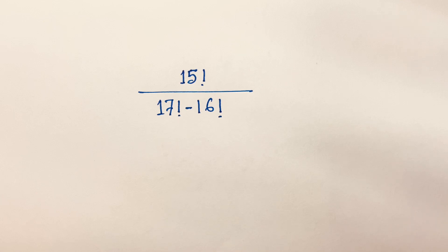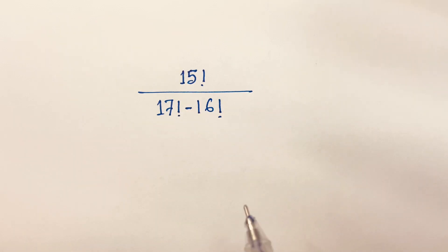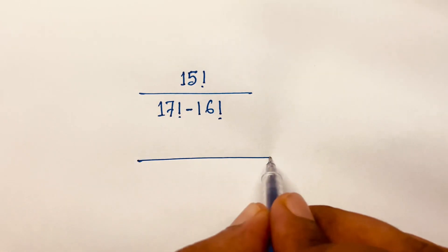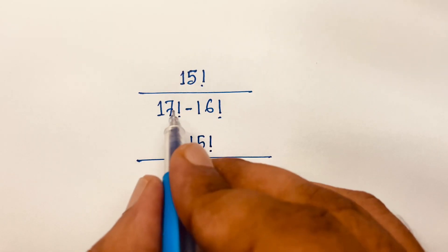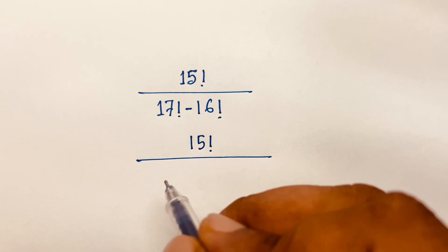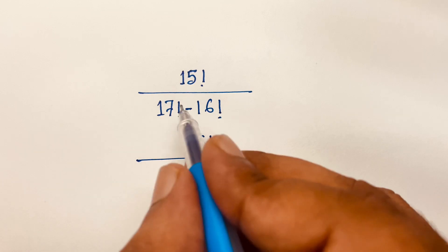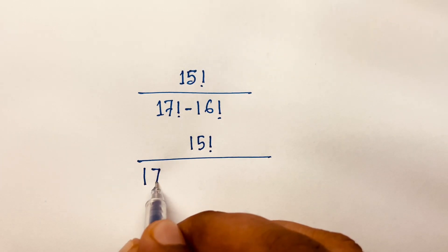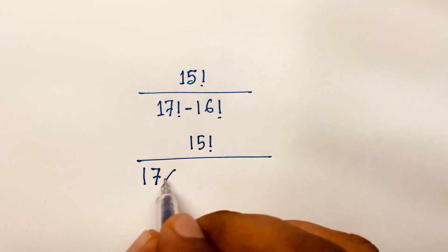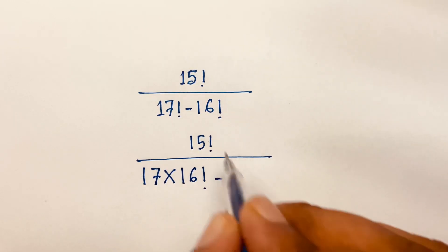How to solve this math olympiad question: 15 factorial over 17 factorial minus 16 factorial. First, I can say 17 factorial equals 17 times 16 times 15 factorial, so 17 factorial equals 17 times 16 factorial.